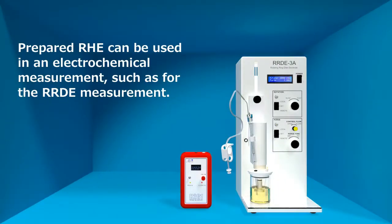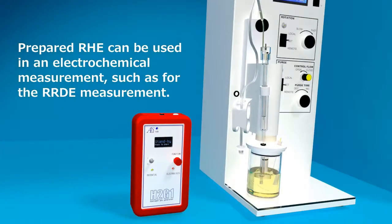The prepared reversible hydrogen electrode can be used in an electrochemical measurement, such as for the RRDE measurement.